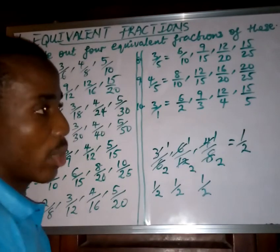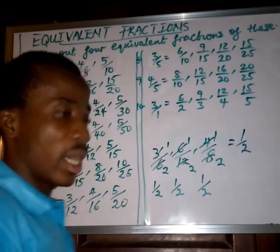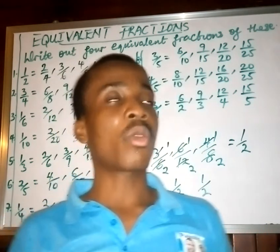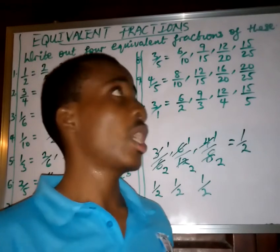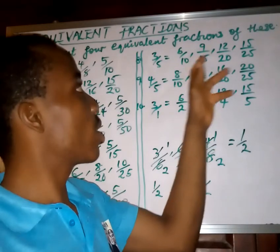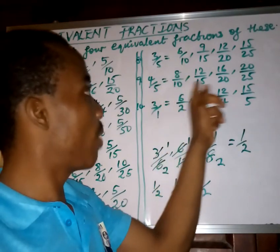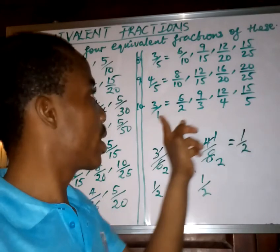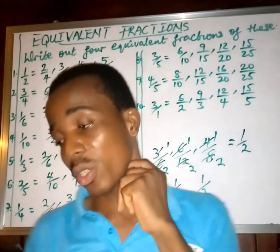So this is how you can get equivalent fractions — it's quite easy and very simple. Don't forget what equivalent fractions are: they are fractions that give us a particular value when they are divided. If you want to test this, divide all the fractions — they return back to their original value, such as 3 over 5, 4 over 5, or 3 over 1. That is how you can verify the value of the fraction.